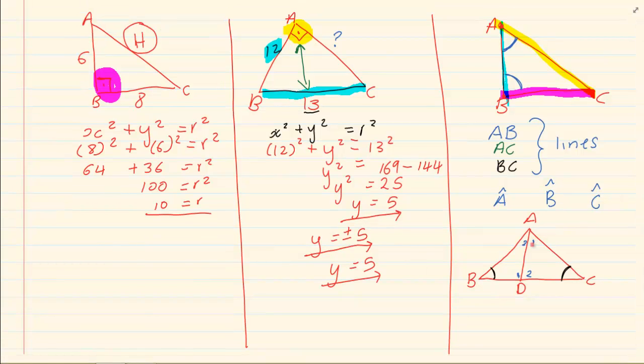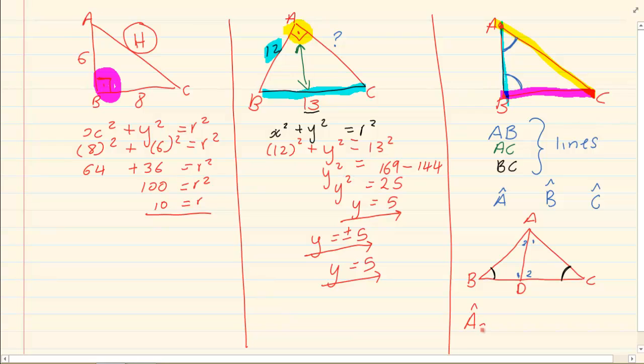Now either you are going to name the angle with its number, so it's A2. Or you read the angle by creating a value with two lines that are making the angle. So in this case, if I wanted A2, I would name it BAD.